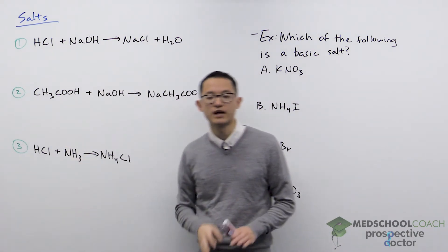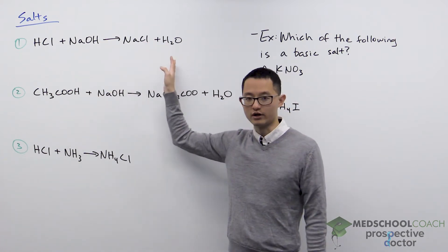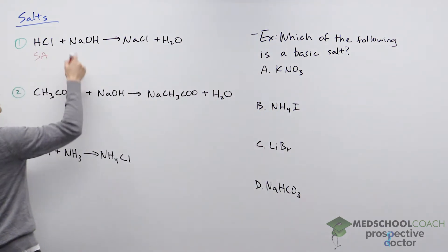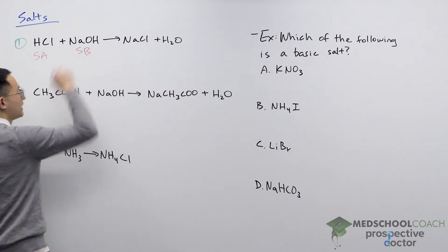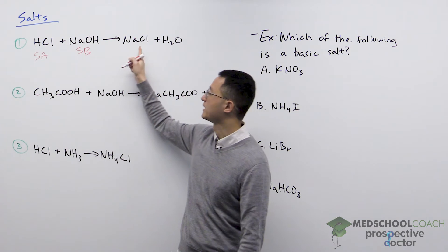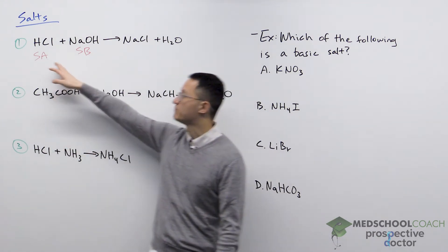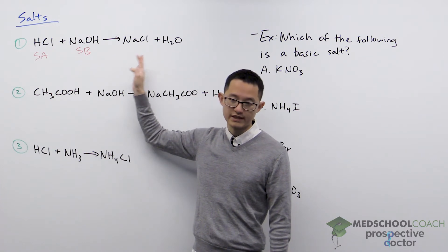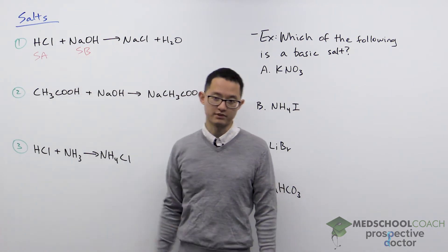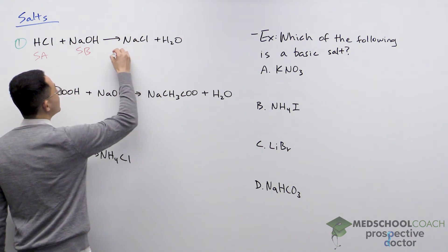Here I've shown examples of the three types of salts. In the first situation we have hydrochloric acid with sodium hydroxide forming NaCl and water. HCl is a strong acid and sodium hydroxide is also a strong base. The salt is formed from the conjugate base of the strong acid and the conjugate acid of the strong base — Na+ and Cl−. The conjugate base of a strong acid, Cl−, has no basic properties, and Na+, as the conjugate acid of a strong base, has no acidic properties. So we have a salt without acidic or basic properties, meaning this is a neutral salt.